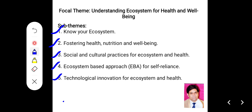Now, try to understand the focal theme: Understanding Ecosystem for Health and Well-Being. It is a broad area of research that includes understanding of ecosystems and their effect on health and well-being. As you already know, ecosystems are the planet's life support systems for the human species and all other forms of life. For human survival, food, water, clean air, shelter and regulated climatic conditions are fundamental needs. Stresses on fresh water resources, food producing systems and climate regulation could cause major adverse health impacts.